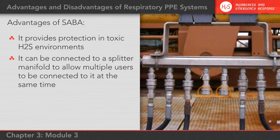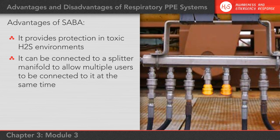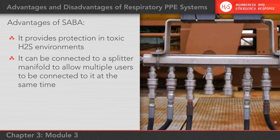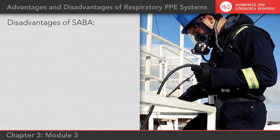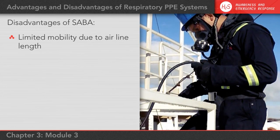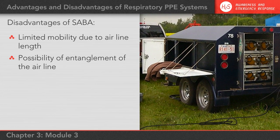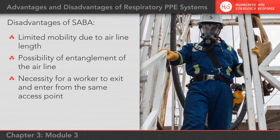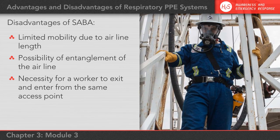Note that if any hoses are not being used, it is recommended that hose couplings are used to prevent contaminants from entering them. Disadvantages of a supplied air breathing apparatus include its limited mobility due to airline length, the possibility of entanglement of the airline, and the necessity for a worker to exit and enter from the same access point in order to avoid airline tangles.